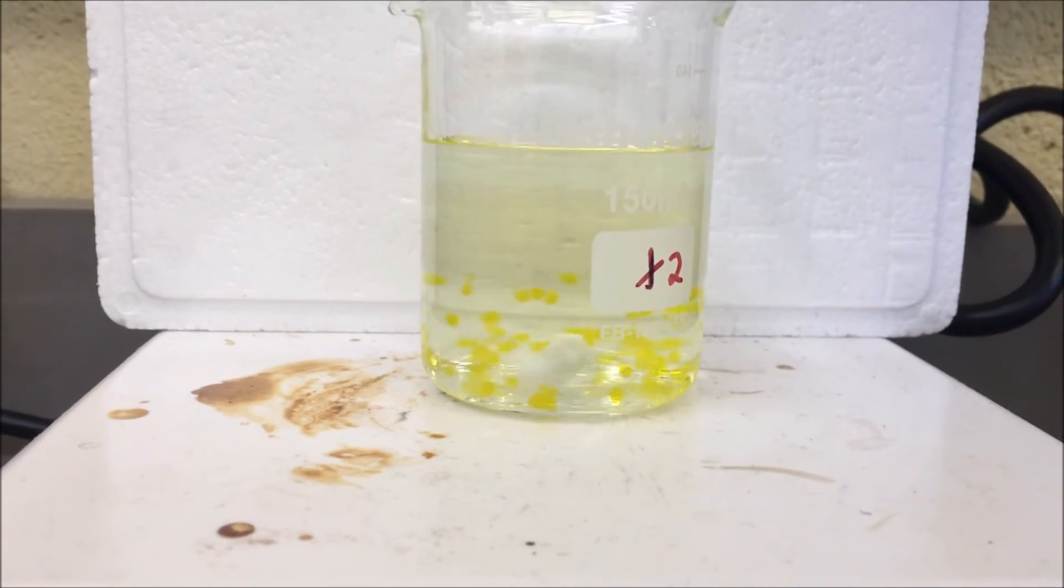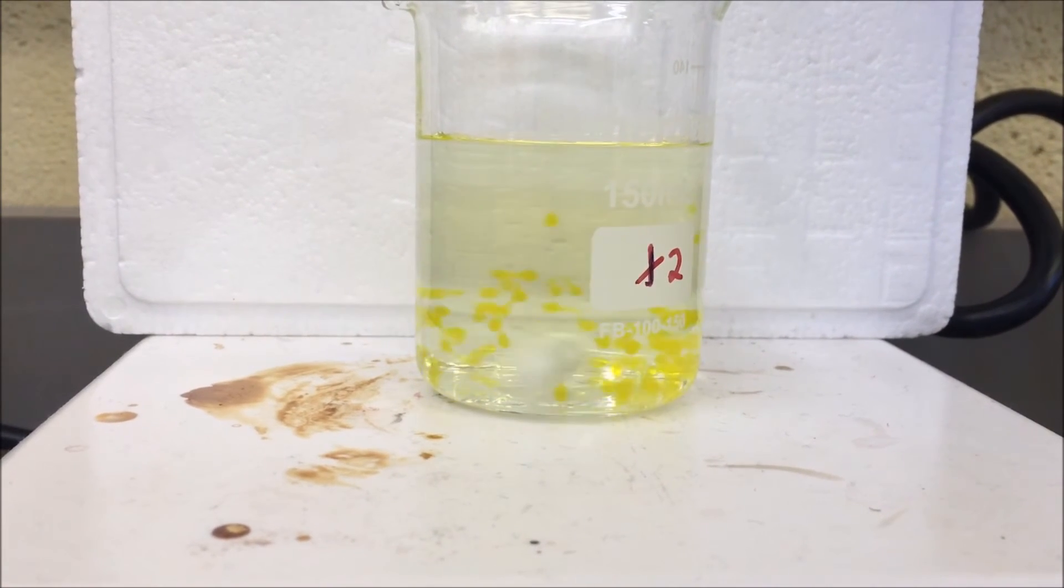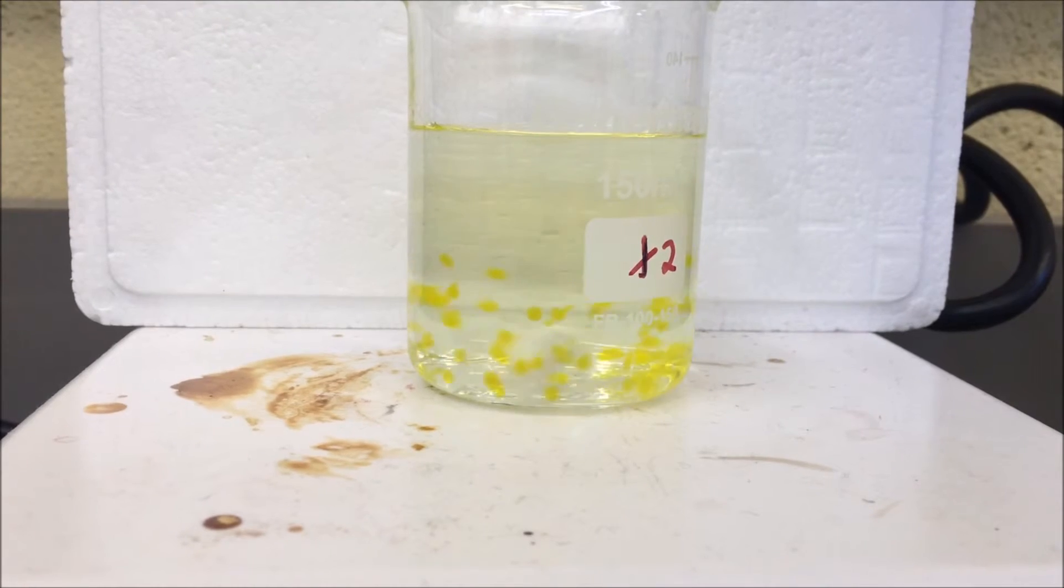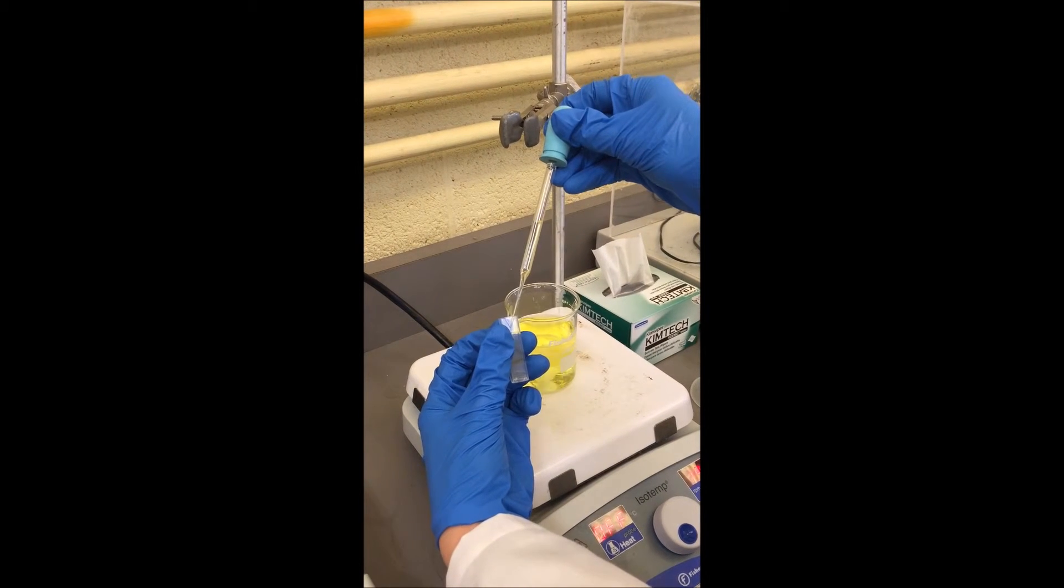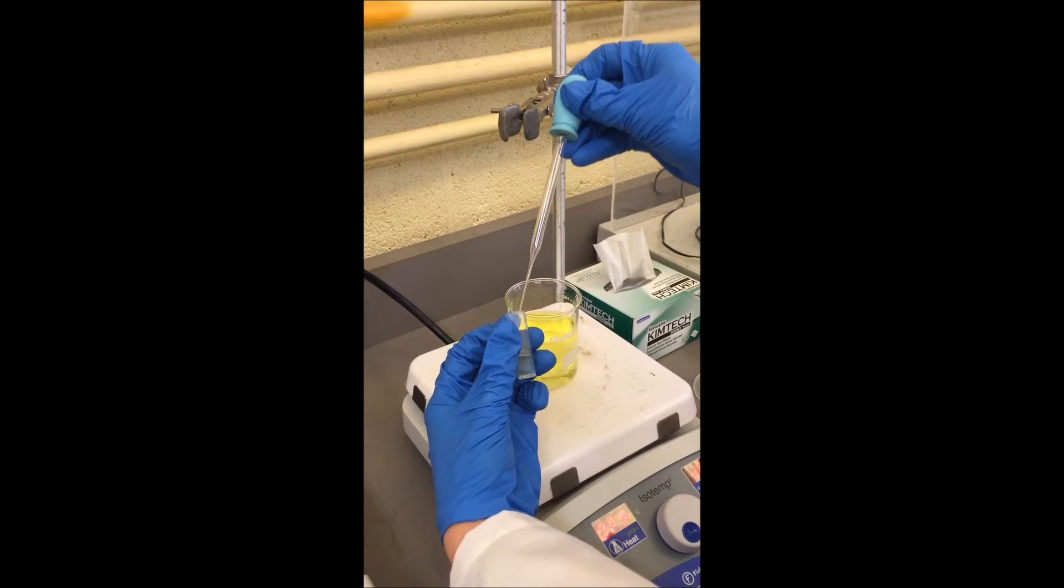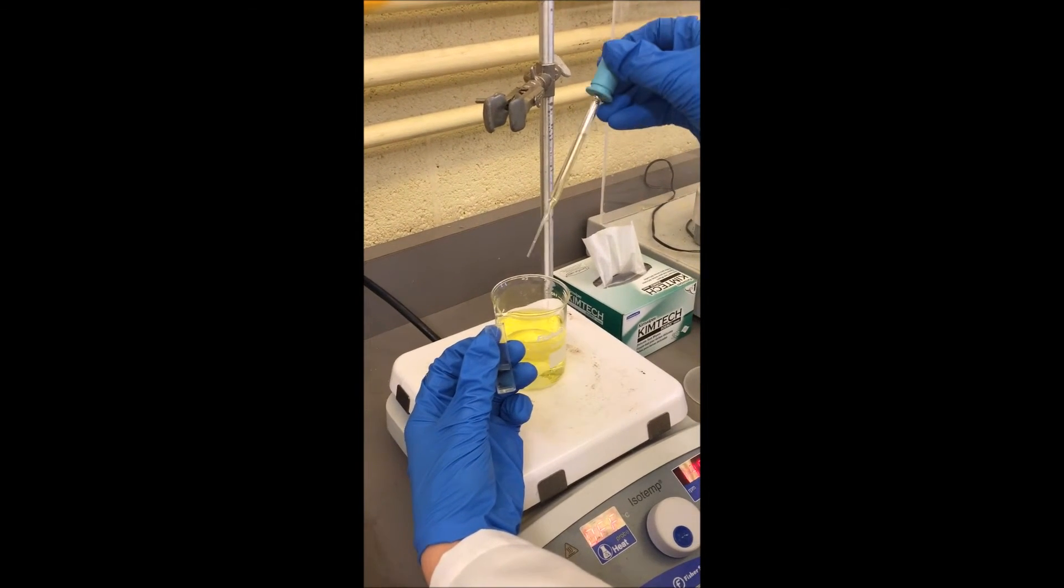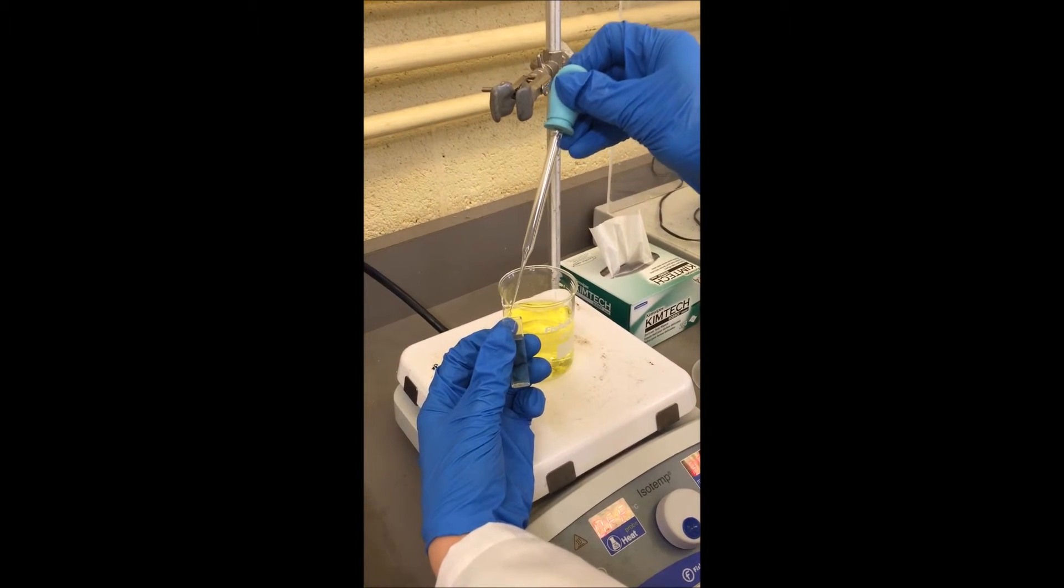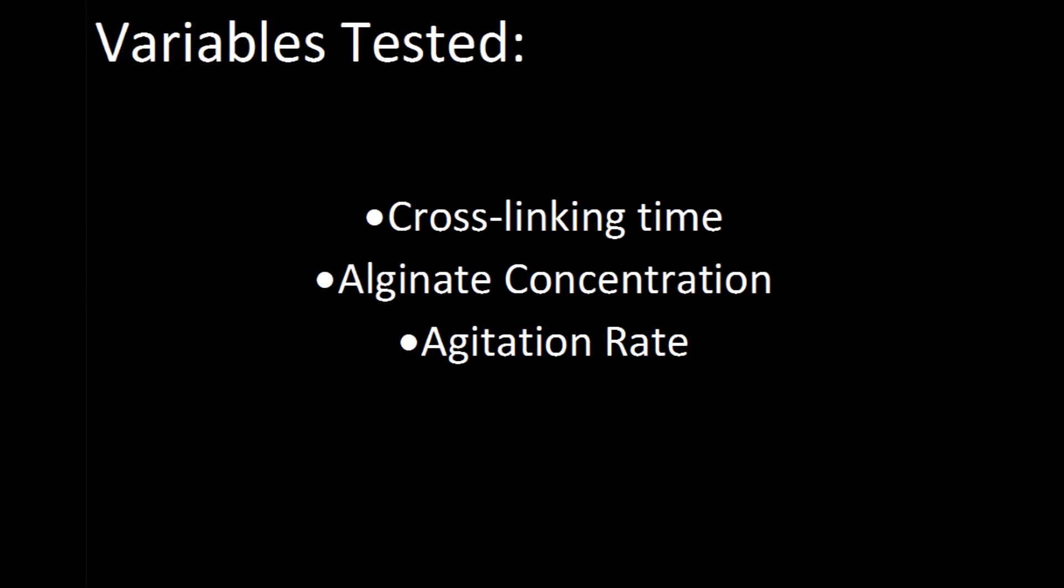Next, place the distilled water beaker on your stir plate and set the desired stir rate. Put your beads in the bath and start taking UV measurements every 10 minutes until the optical density plateaus. When taking your measurements, pipette 3 milliliters of solution into your pipette, making sure not to take up any beads. Pour your solution back into the beaker after the reading.